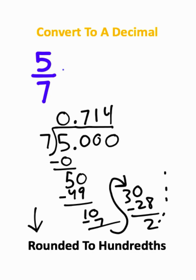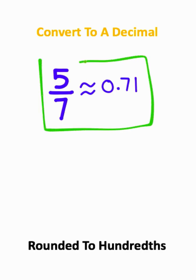So our decimal approximation is going to be that 5 over 7 is approximately equal to 0.71. So this is the answer to the problem.